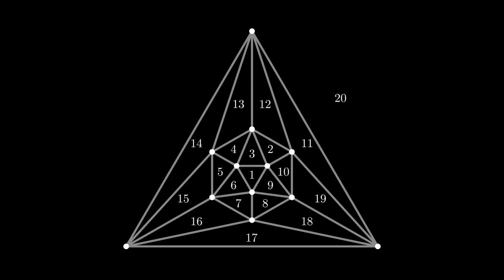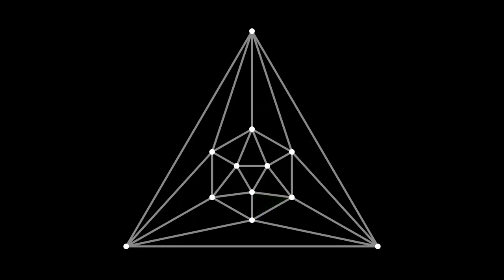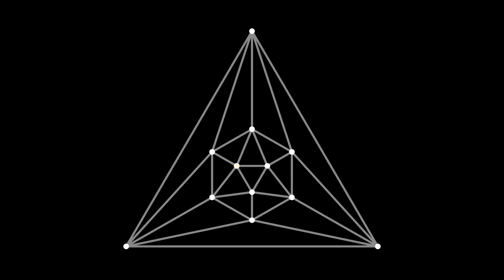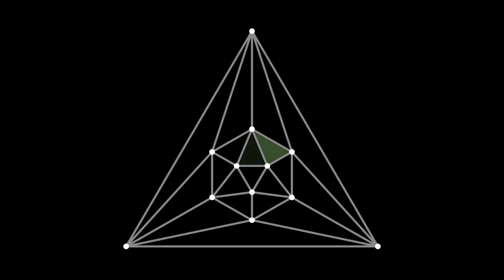I've flattened it out so that we can reason about the icosahedron a little more easily. We can see that each of the faces is a triangle. Around each vertex, like this yellow vertex, there are five faces. Here's another vertex with its five neighbors. Every single vertex looks the same.